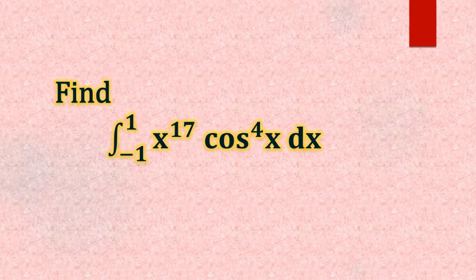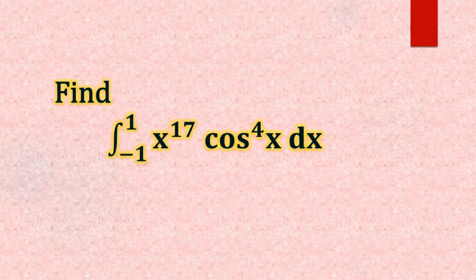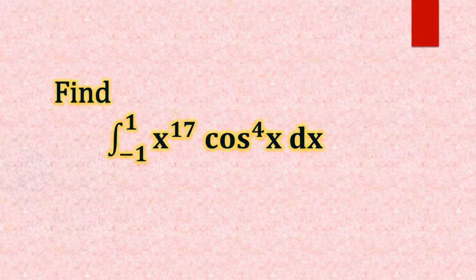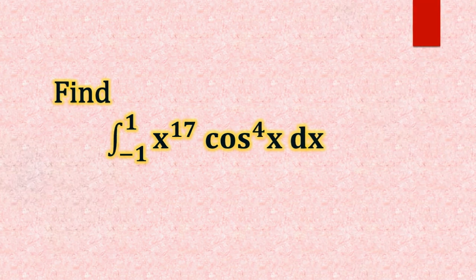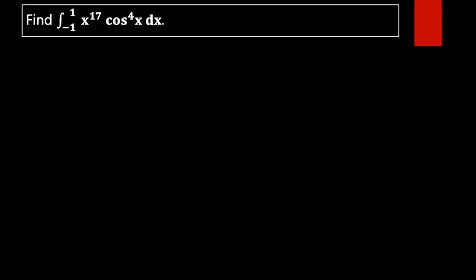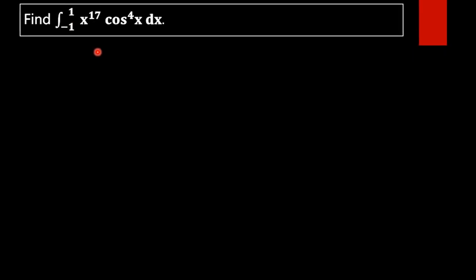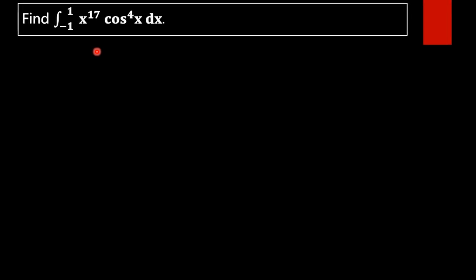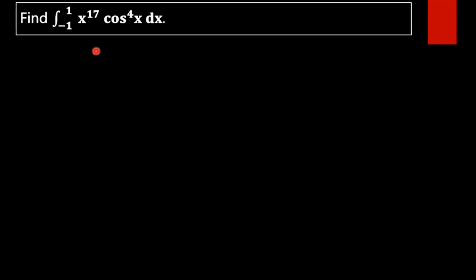Find the integral from minus 1 to 1 of x raised to 17 into cos raised to 4x dx. To do this problem, we are going to use the properties of definite integrals, which makes this a quite easy problem.